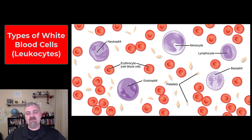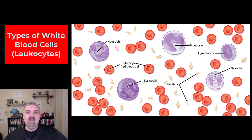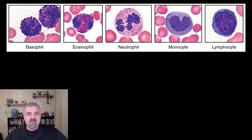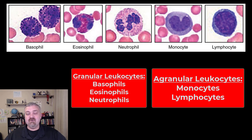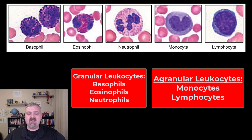Left to right you see the neutrophils, eosinophils, monocytes, basophils, and lymphocytes. There are five different types of leukocytes broken into two groups. The basophils, eosinophils, and neutrophils are called granular leukocytes because you can see all those little granules in the images. Then the monocytes and lymphocytes are going to be agranular leukocytes or white blood cells. I don't use those terms very often but I do want you to know them.